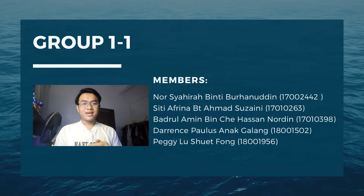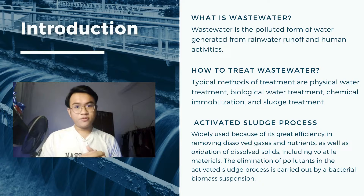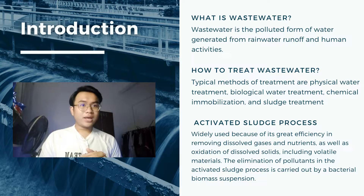Wastewater is a polluted form of water generated from rainwater runoff or from human activities. To treat wastewater, we have different types of treatment: physical water treatment, biological water treatment, chemical immobilization, and sludge treatment. We have chosen the activated sludge process, which is widely used because of its great efficiency in removing dissolved gases and nutrients, as well as oxidation of dissolved solids including volatile materials.